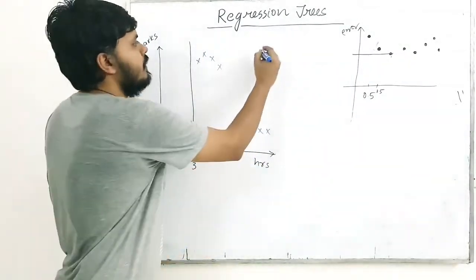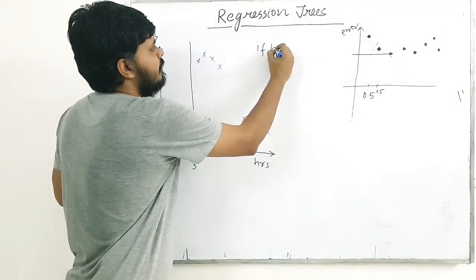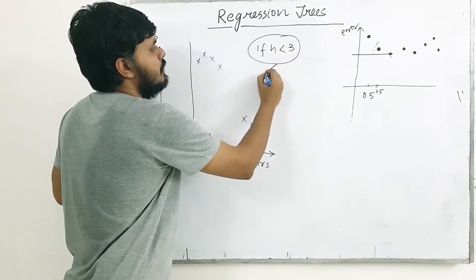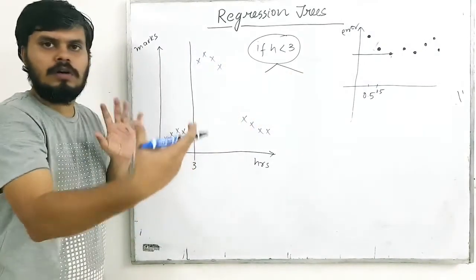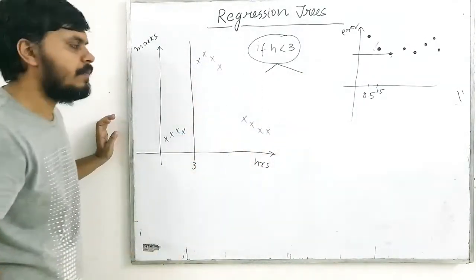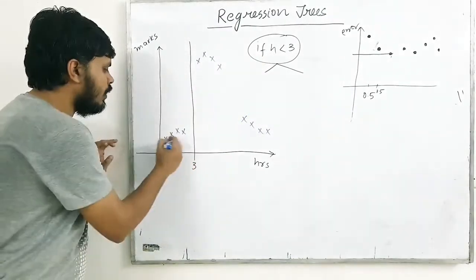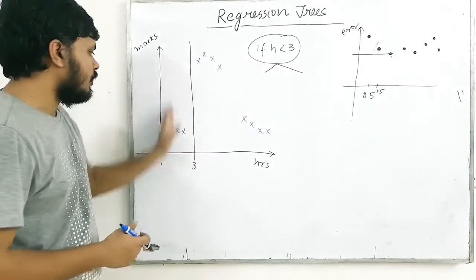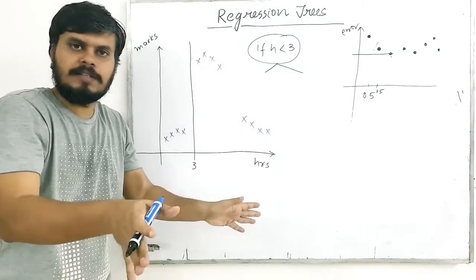Once we identify the first split — say hours less than 3 — we now have two groups. We then need to do the same work in both portions: take pairs of points, split, do the error plot, and find the next best criteria. This creates two subtrees.